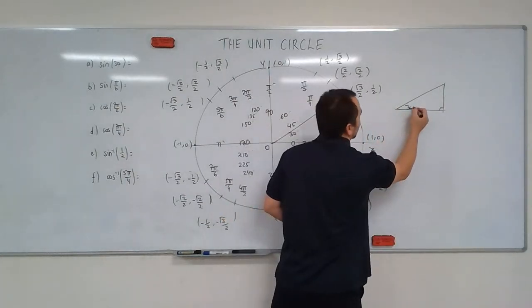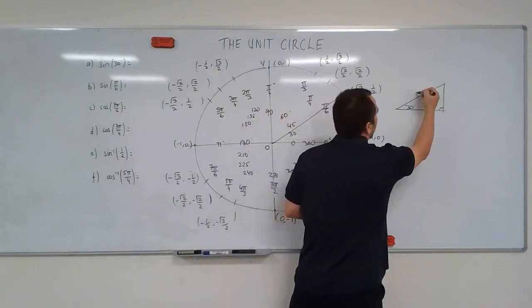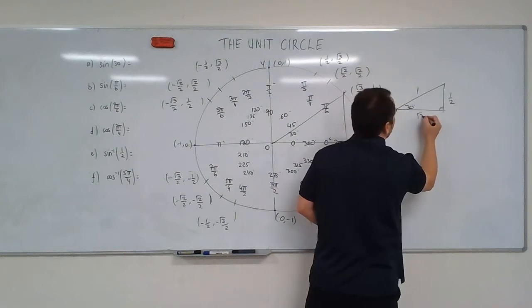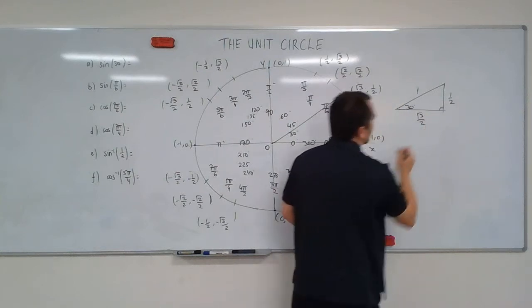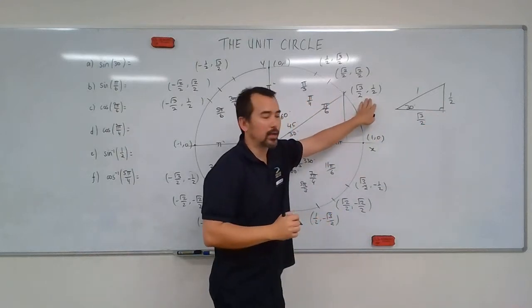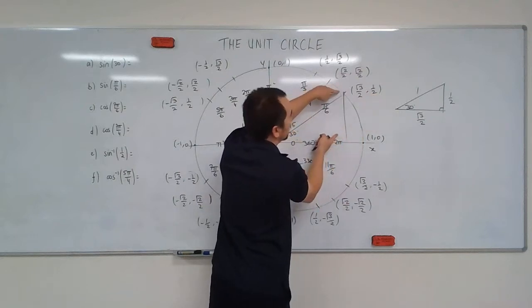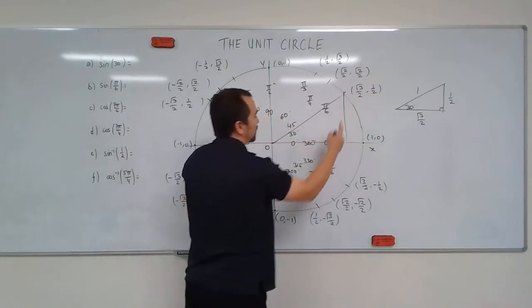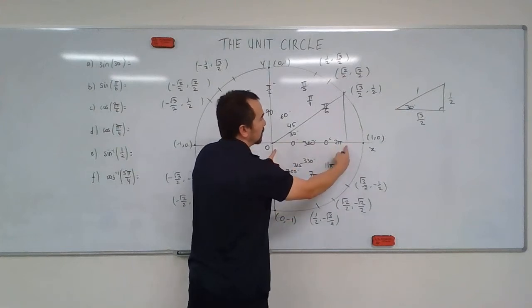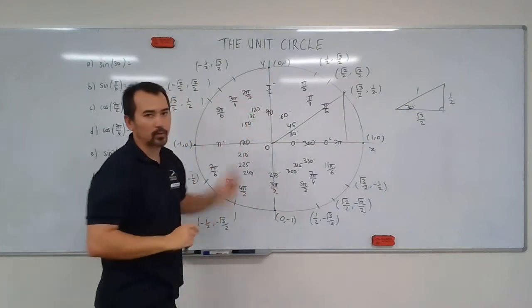And this acute angle is 30 degrees. Now remember from our first video, using special values, that if my hypotenuse is 1, this distance here was 1 half and this adjacent distance is root 3 on 2. And we have those values here as well because the root 3 on 2 represented that distance. That half represented this distance. The root 3 on 2 represents the x component of that coordinate and that 1 half represents the y value of that coordinate.